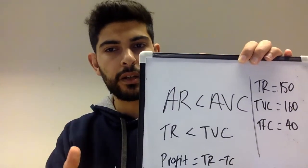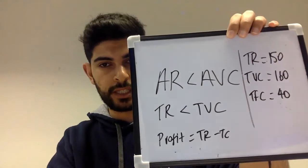To illustrate the shutdown case: if TR = 150, TVC = 160, TFC = 40, the firm makes a loss of £50 overall. If it shuts down it only loses £40 (the fixed costs). But if it stays open, it earns £150 from output that cost £160 to produce — a £10 loss on production itself — making the total loss £50. So it should shut down immediately. A good practice question is January 2011, question 2, which involves a cost and revenue diagram with AVC and ATC curves and requires understanding of the shutdown condition.